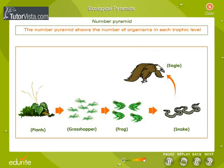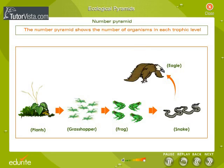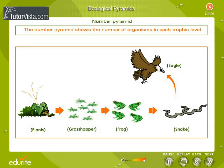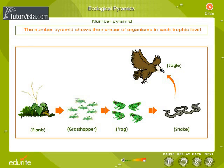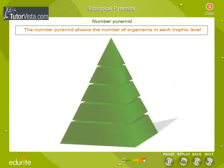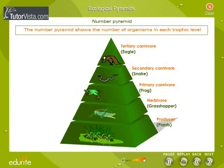For example, consider the food chain in a grassland. The producers are grass and shrubs. First order consumers can be grasshoppers. Second order consumers can be frogs. And it goes on as snakes and then eagle. The number of plants is much higher than grasshoppers. The number of frogs is lesser than grasshoppers, and the number of snakes will be still lesser. The eagles are only a few for the given area. Thus, it forms a pyramid on comparison.